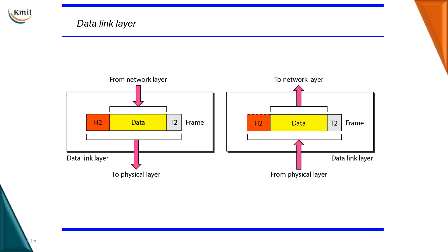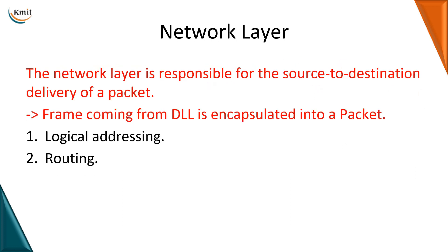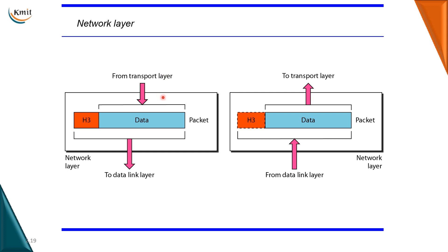The third layer is the network layer — a very important layer responsible for source-to-destination delivery of a packet. While a frame is the unit of information exchanged at the data link layer, the unit at the network layer is called a packet, where a frame is encapsulated into a packet. The network layer does logical addressing and routing. You can see the network layer encapsulates the frame into a packet for the transport layer.